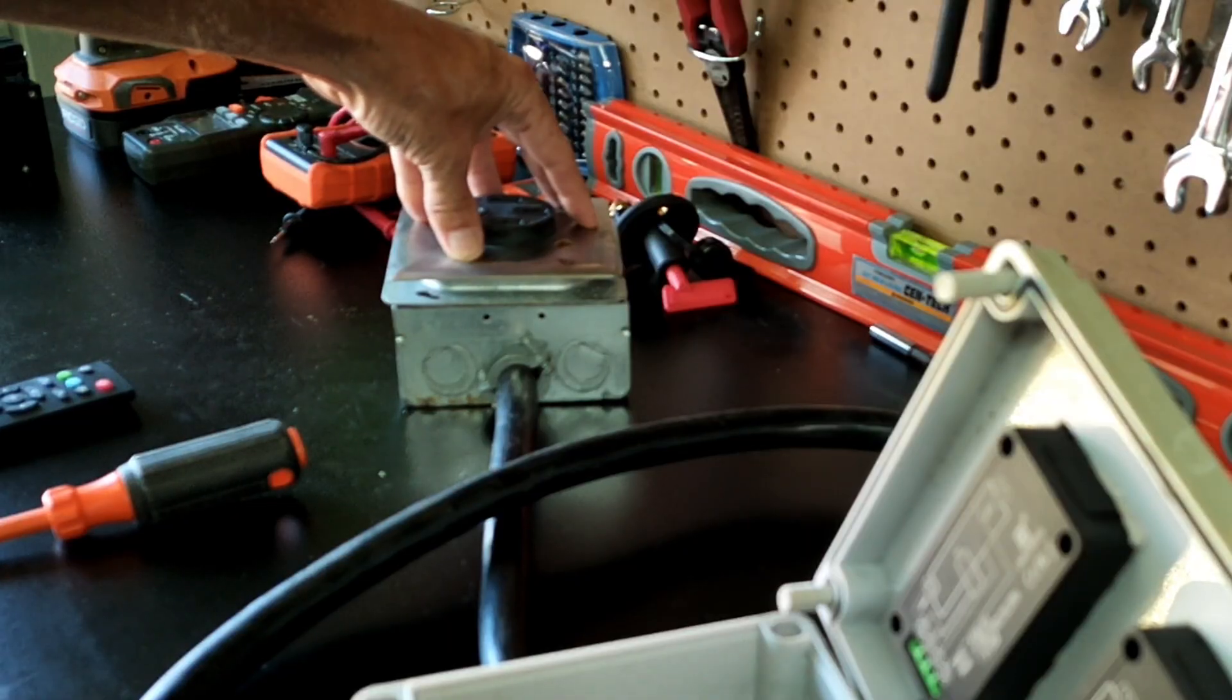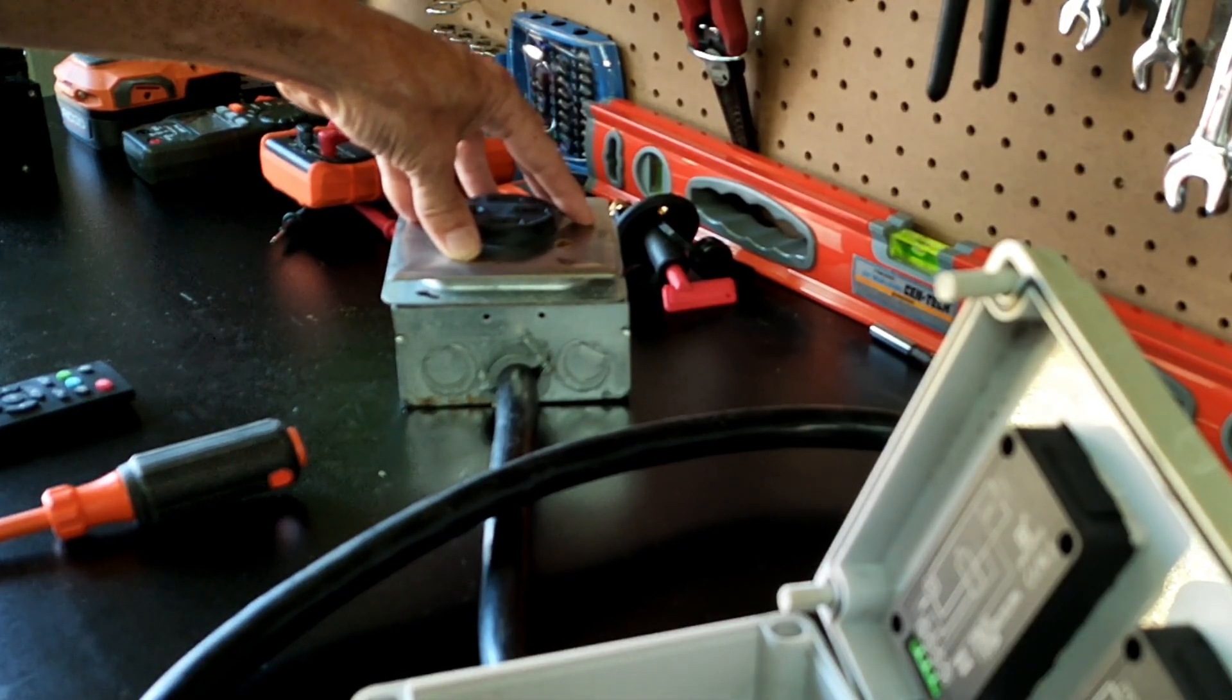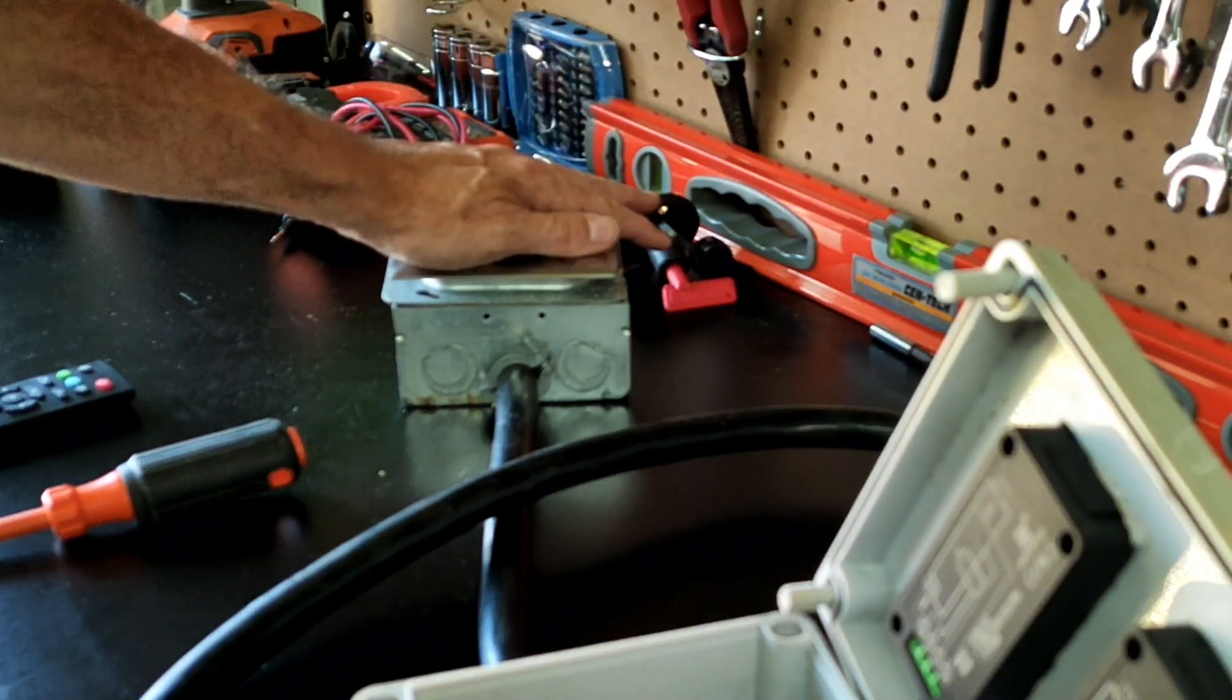Some of those cheap ones from Home Depot are very dangerous. They really can't handle 50 amps. They can spike up to 50 for very short periods of time, but anything over about 25 amps is quite dangerous for them, so please don't use those.